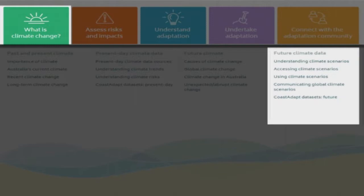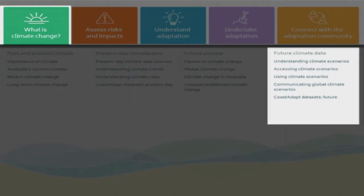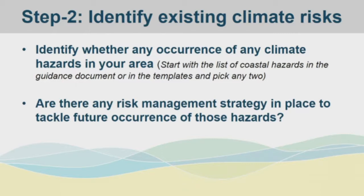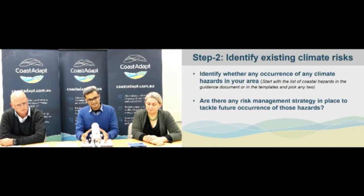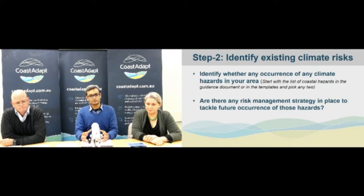In Coast ADAPT we have a section called future climate data which provides a range of information about climate change scenarios, their access, use and interpretation — so that's a very good source of information. So in step one you have identified your objective, scale, time frame and scenario you want to use in your assessment. In step two it's about identifying your existing climate related risk.